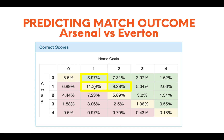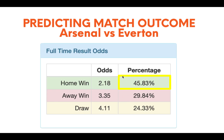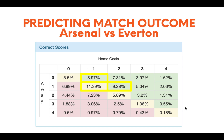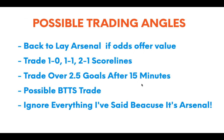For Arsenal versus Everton, the model gives us these percentage chances for each scoreline. The highest probability is a 1-1 draw at 11.39%, next is 2-1 to Arsenal at 9.28%, and third is 1-0 to Arsenal at 8.97%. Adding up all the Arsenal win probabilities gives 45.83% chance of an Arsenal win, 24.33% chance of a draw, and 29.84% chance of an Everton win. On the face of it, they look like a very even set of teams, which seems a reasonable assessment.